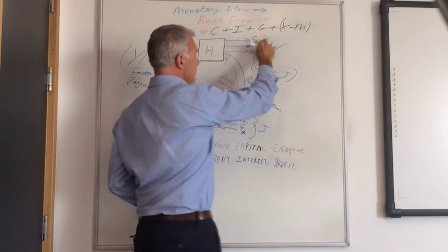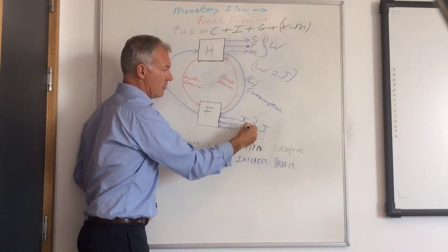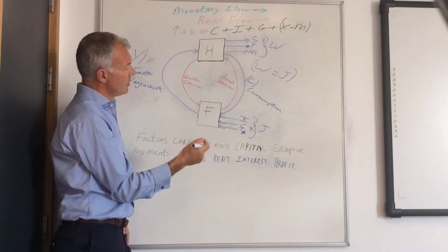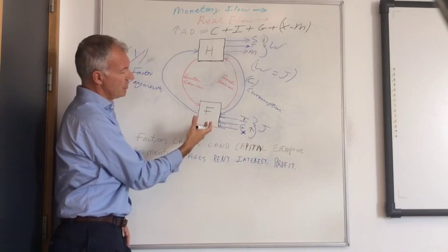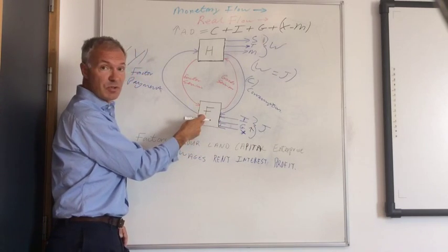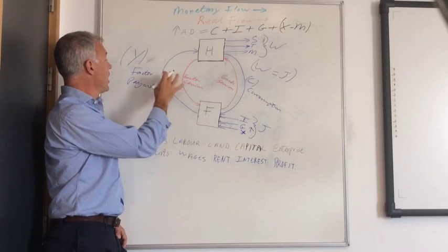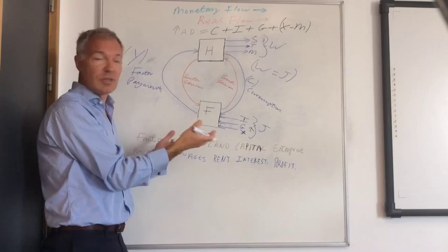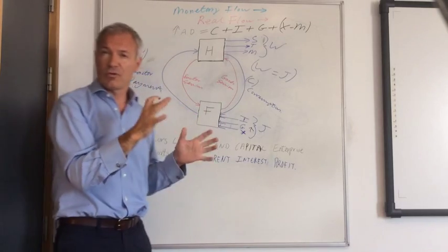Look at another situation, say, the government would increase government expenditure, say, by borrowing. This would increase the injections into the economy, the level of firms would produce more goods and services, incomes would increase, and the level of economic activity would increase in the economy, and unemployment might fall.